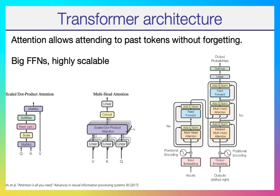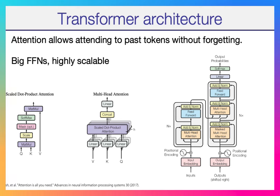Let me briefly recap the transformer architecture. Attention allows attending to past tokens without forgetting. In LSTM you have to maintain a certain hidden state, but in attention you can directly attend to any past token — the model does not have this information bottleneck. Another reason transformers scale so well is that you can increase your parameters easily by adding bigger MLP networks, which is just matrix multiplication. It scales really well with our generation of GPUs and TPUs.